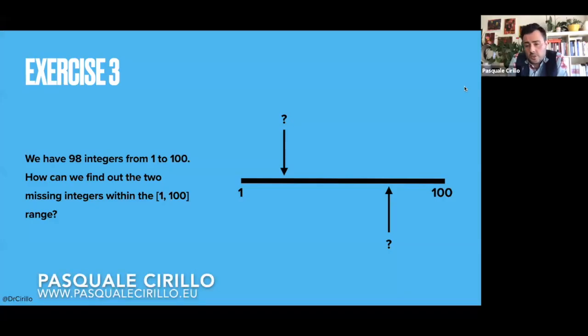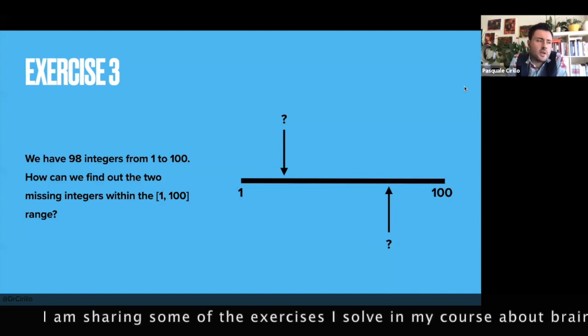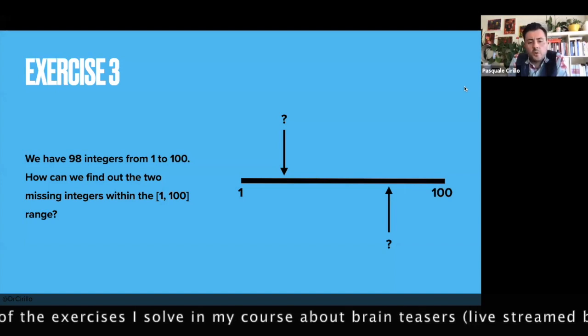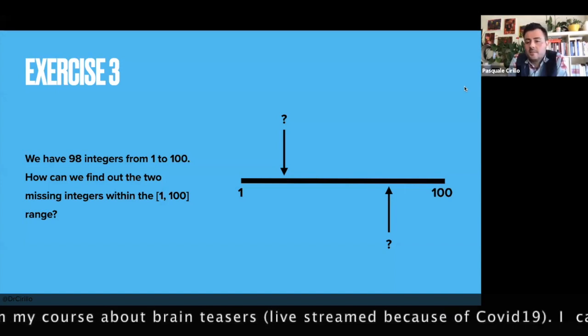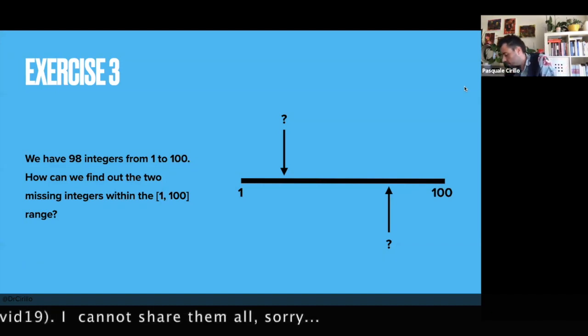We consider the integers from 1 to 100, but we only have 98 of these integers. The question is, can you find out a way in which you can identify what are the missing integers without checking every single integer?